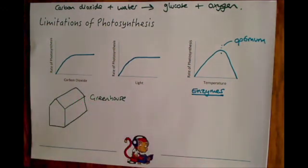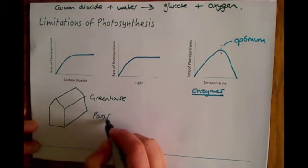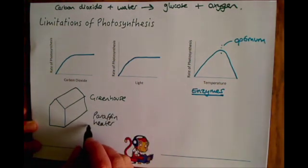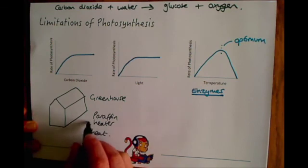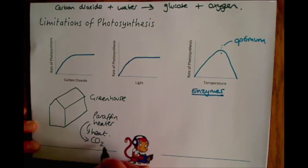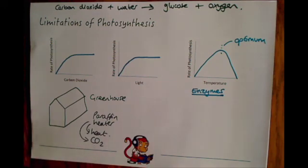One thing that they sometimes put in greenhouses is something called a paraffin heater. Because this not only gives out heat, but it also, as it's burning fuel, releases carbon dioxide as well. So these can be really beneficial to maintain the optimum levels in your greenhouse. And obviously it will all depend on cost and how much the plants are going to cost compared to how much you're going to put in to get those carbon dioxide light and temperature levels correct.